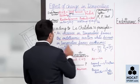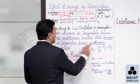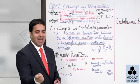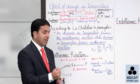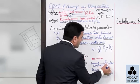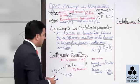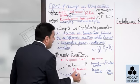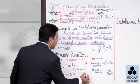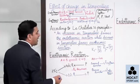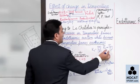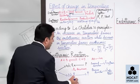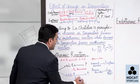An increase in temperature favors the exothermic reaction — wait, let me clarify: if we decrease temperature, temperature kam karein ge, exothermic reaction shuru ho jaega. And which one is exo? Exo is forward. That means if we decrease temperature, reaction goes forward and reactants convert to products. Product concentration increases and thus Kc increases. So we say Kc increases.